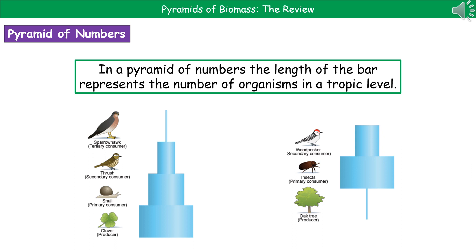You can see the diagram on the right shows us we've got a single oak tree, so that's a very narrow bar. But living on that one oak tree are many insects, and then there are fewer woodpeckers that feed off those. So not all Pyramids of Numbers are pyramid shaped.